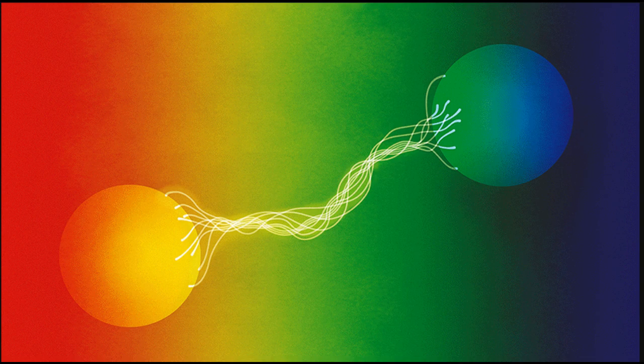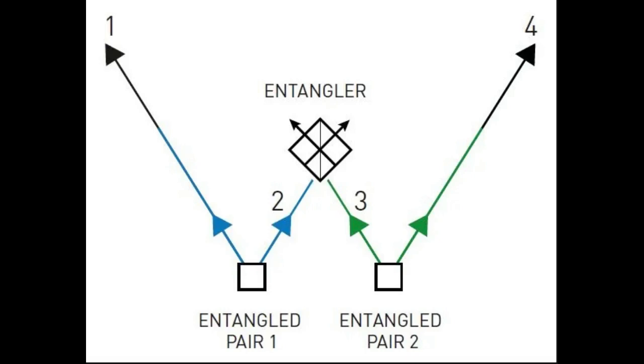Two pairs of entangled particles are emitted from different sources. One particle from each pair is brought together in a special way that entangles them. The two other particles, one and four in the diagram, are then also entangled. In this way, two particles that have never been in contact can become entangled.